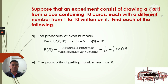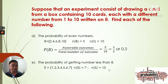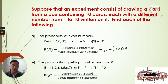For question E: the probability of getting a number less than 8. We define event E as getting a number less than 8. The elements are 1, 2, 3, 4, 5, 6, 7 — so the cardinality of E is 7. The sample space has 10 elements. Substituting into the formula, P(E) equals 7 over 10, which equals 0.7.